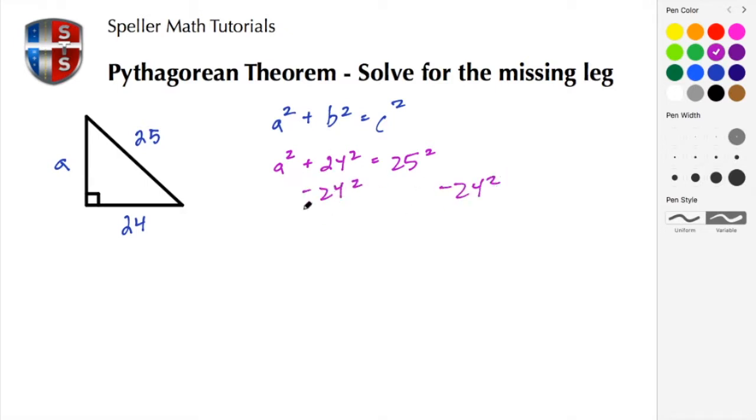Then we have a squared is equal to 25 squared minus 24 squared. Next thing we need to do is take the square root of both sides so that we can isolate the a squared. We just want it to be a, so here we have a is equal to the square root of 25 squared minus 24 squared.